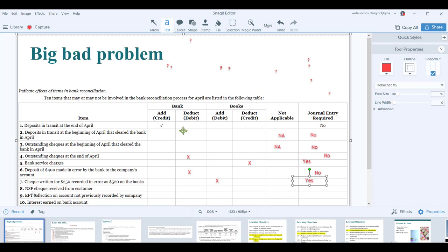Non-sufficient funds NSF check received from a customer. So we thought we had their cash and then it bounced, like the person in the grocery store. We absolutely need to minus the cash because we don't have it. I'm going to probably credit our cash and debit accounts receivable. So yes, because we had an entry that happened on our books, we need to make that journal entry.